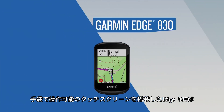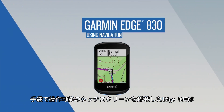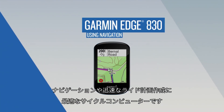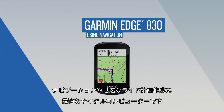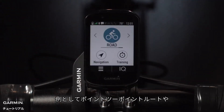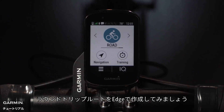With its responsive, glove-friendly touchscreen, Edge 830 is perfect for navigating and planning rides on the fly. For example, you can create a point-to-point route or a round-trip route right on your Edge.